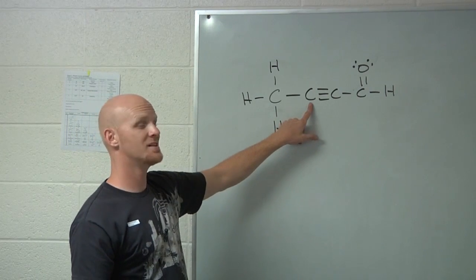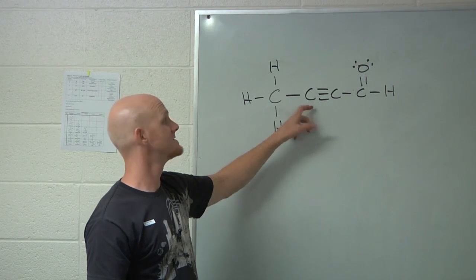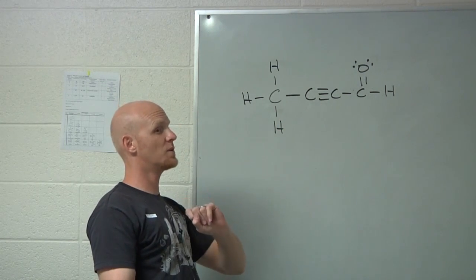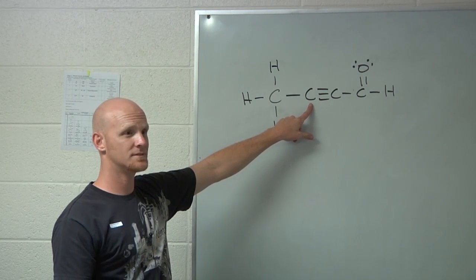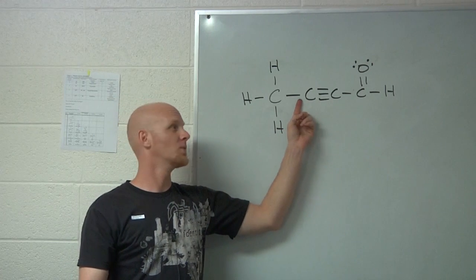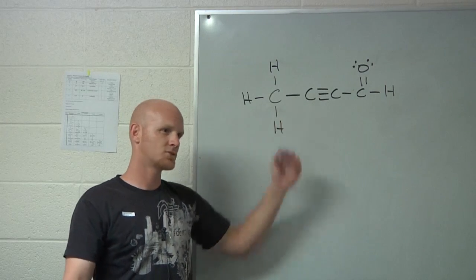How many electron domains around him? Four. How many directions total? Just two directions. So notice a triple bond just counts as one direction, one domain. And so just two domains. So with two domains, what's his hybridization? SP. What are his bond angles? 180. What is the shape called around him? Linear.